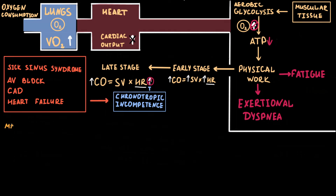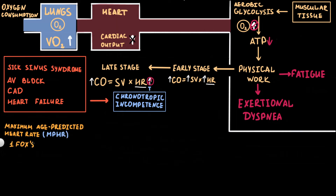For understanding the diagnostic criteria of chronotropic incompetence, we first need to know how to calculate maximum age-predicted heart rate. This is typically done using the Fox formula, where maximal age-predicted heart rate equals 220 minus age.